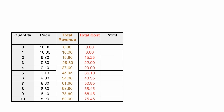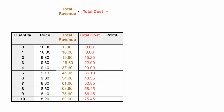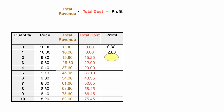Profit equals total revenue minus total cost. If I have total revenue of 0 minus total cost of 0, I have 0 profit. Total revenue of 10, total cost of 8, gives profit of 2. Total revenue is $19.60, total cost $15.25, total profit $4.35. Now I'll just fill in the rest of the values.